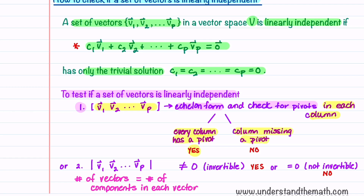The second way to check if a set of vectors is linearly independent is to find the determinant of the vectors. This method can be used if the number of vectors equals the number of components in each vector. When this is true, the matrix containing the vectors will be square and you can take the determinant. If the determinant is not equal to 0, the matrix is invertible and the set of vectors is linearly independent. If the determinant is equal to 0, the matrix is not invertible and the set of vectors is not linearly independent.